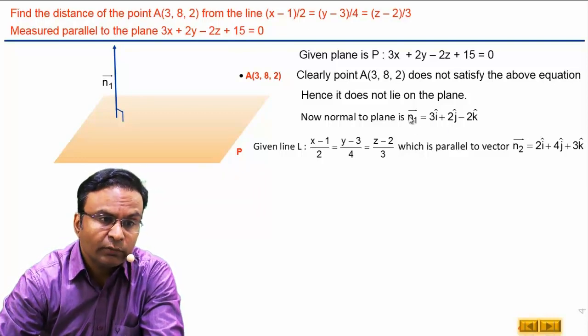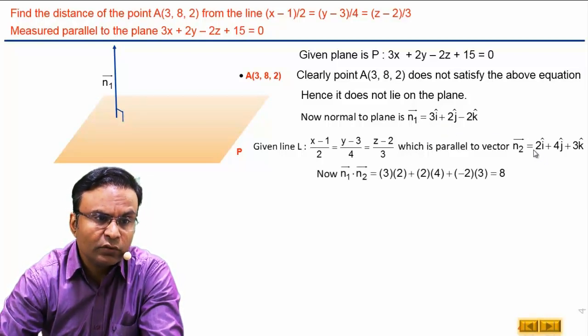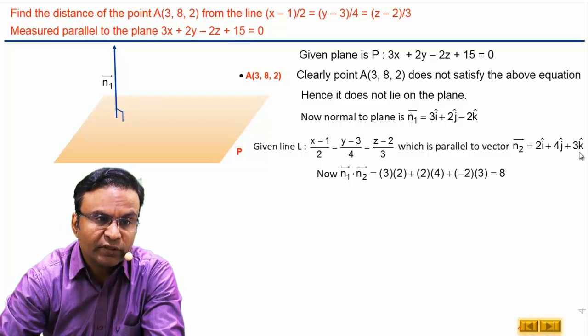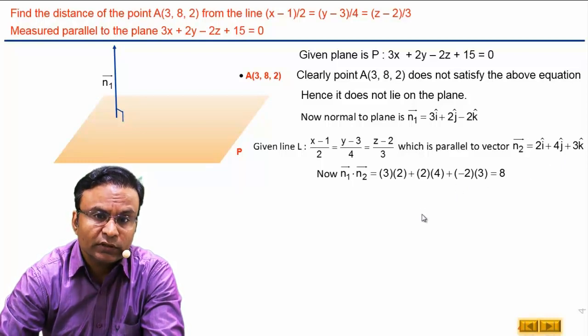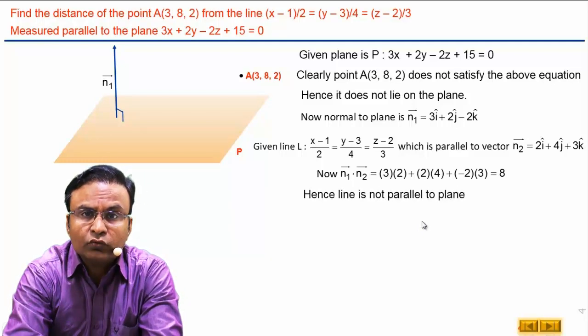We will take dot product of vectors n1 and n2 which is 3 multiply by 2 plus 2 multiply by 4 and minus 2 multiply by 3 which is 8. This is not 0, that means line is not parallel to the plane.